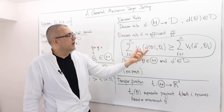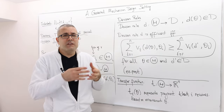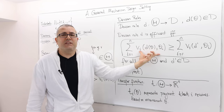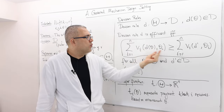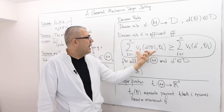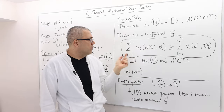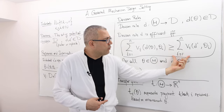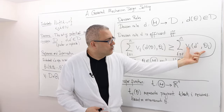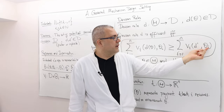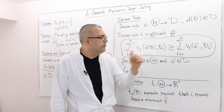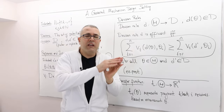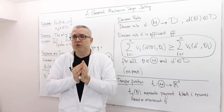Decision rule d is efficient if and only if this inequality holds for all type profiles and for any decision d prime in D. The decision rule d maximizes the total sum of agents' utilities: the sum of v_i(d(theta), theta_i) over all individuals must be greater than or equal to the same sum evaluated at any alternative decision d prime. So d is efficient in the Pareto sense — it maximizes the sum of individual utilities.